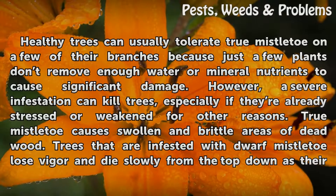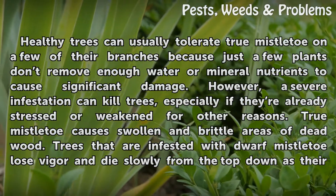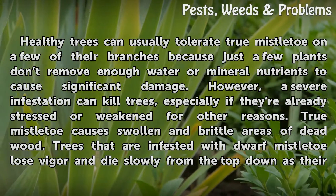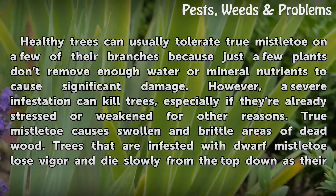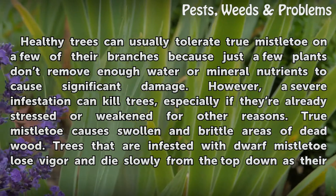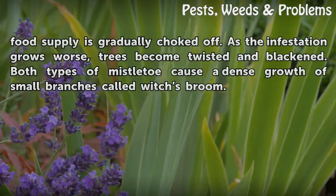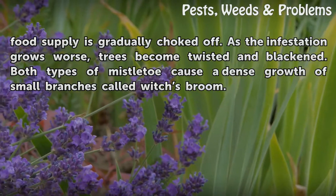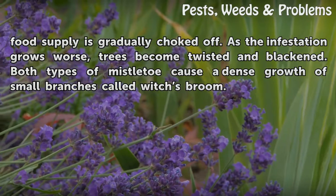Healthy trees can usually tolerate true mistletoe on a few of their branches because just a few plants don't remove enough water or mineral nutrients to cause significant damage. However, a severe infestation can kill trees, especially if they are already stressed or weakened for other reasons. True mistletoe causes swollen and brittle areas of dead wood. Trees infested with dwarf mistletoe lose vigor and die slowly from the top down as their food supply is gradually choked off. As the infestation grows worse, trees become twisted and blackened. Both types of mistletoe cause a dense growth of small branches called witch's broom.